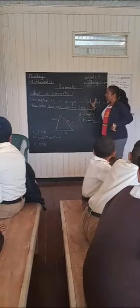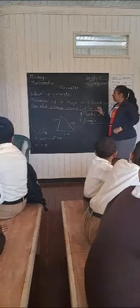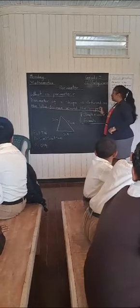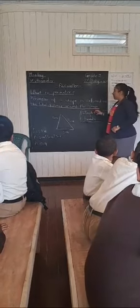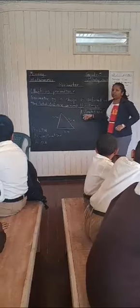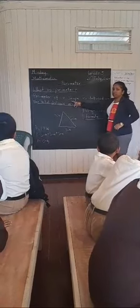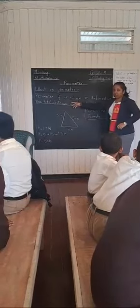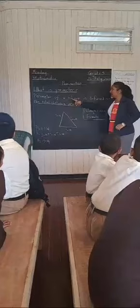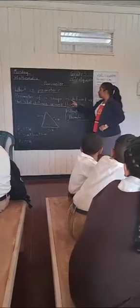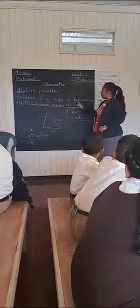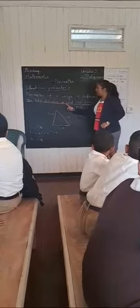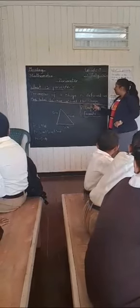Do you know what I have? Alright, let me tell you. Alright, so perimeter of the shape is defined as the total distance around the shape. What is it? Perimeter. Perimeter of that shape is defined as the total distance around the shape.